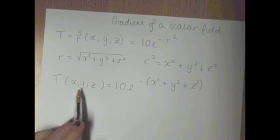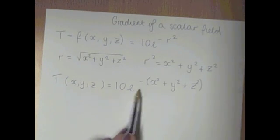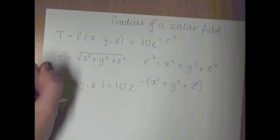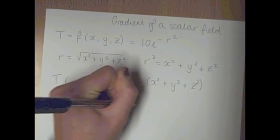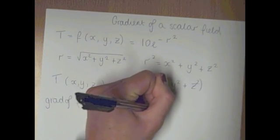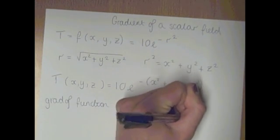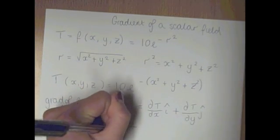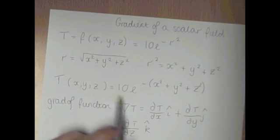So from this, we want to find the grad of this function. So to find the grad of it, we need to find the partial derivatives. So grad T equals partial derivative with respect to x, which is the i component, plus partial derivative with respect to y, which is the j component, and then partial derivative with respect to z, which is k.